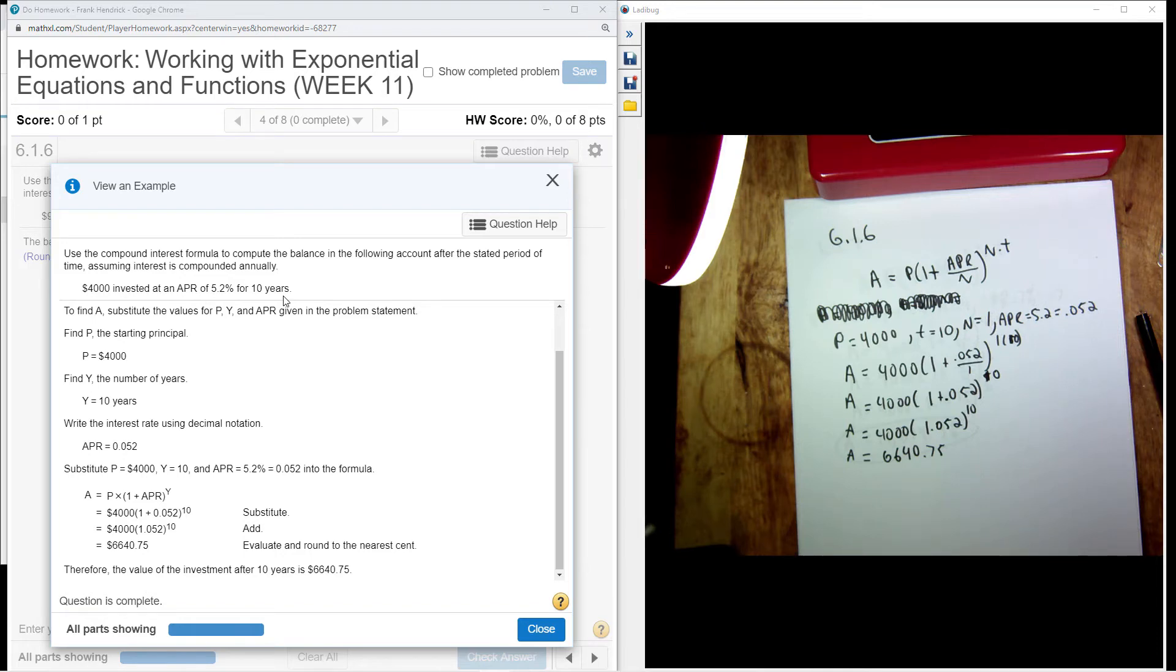Okay, use compound interest formula to compute the balance in the following account after the stated period of time. Assume that interest is being compounded annually: $4,000 invested at APR 5.2% for 10 years.